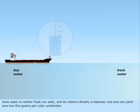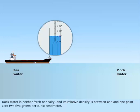Dock water is neither fresh nor salty, and its relative density is between 1 and 1.025 grams per cubic centimeter.